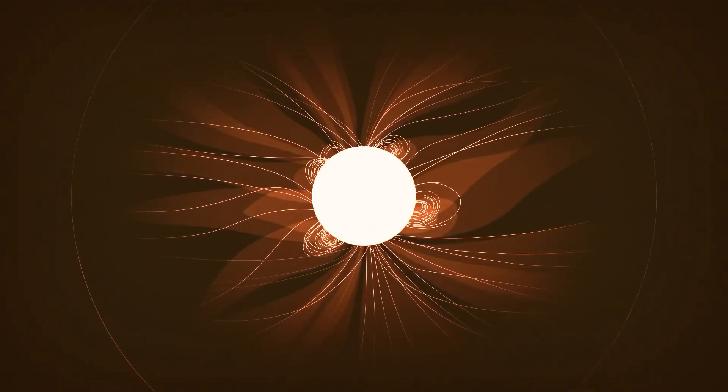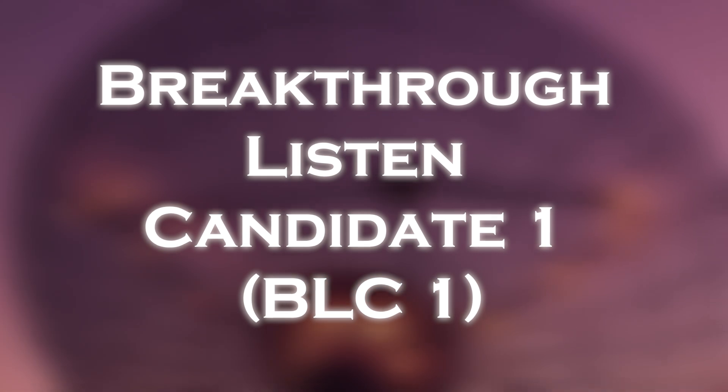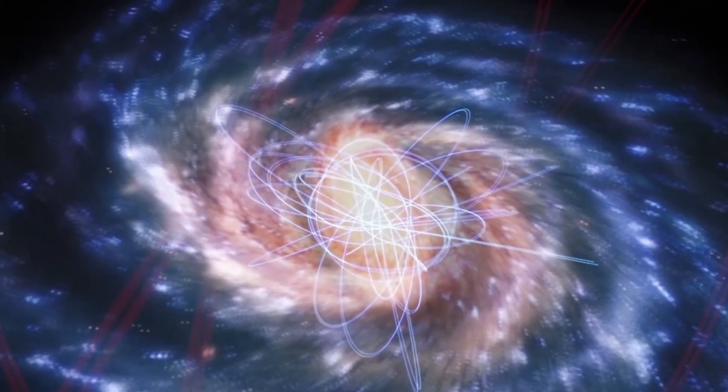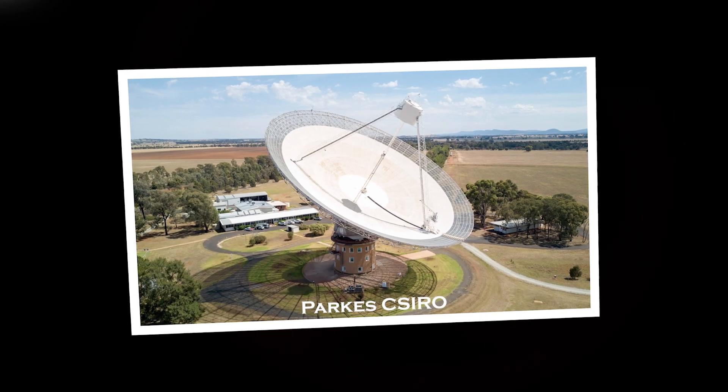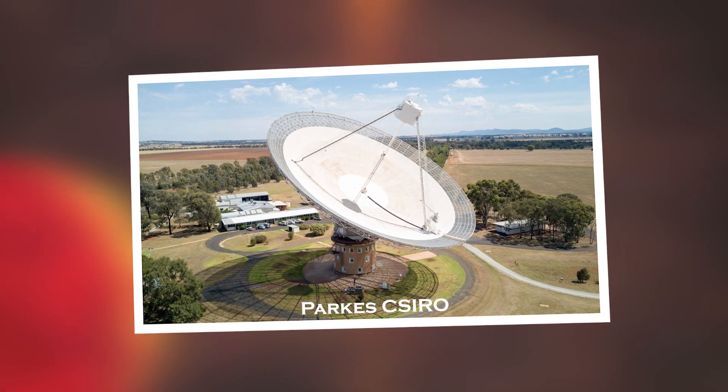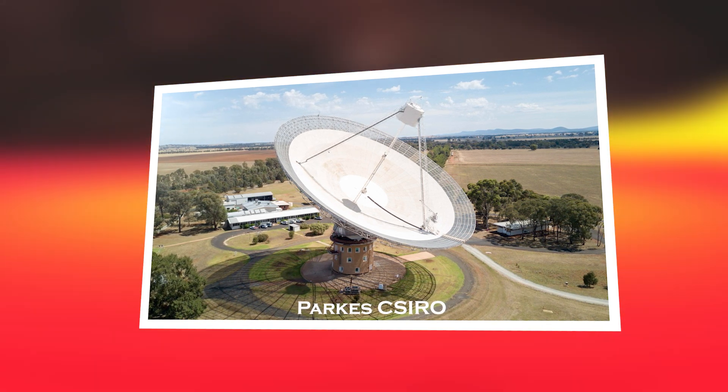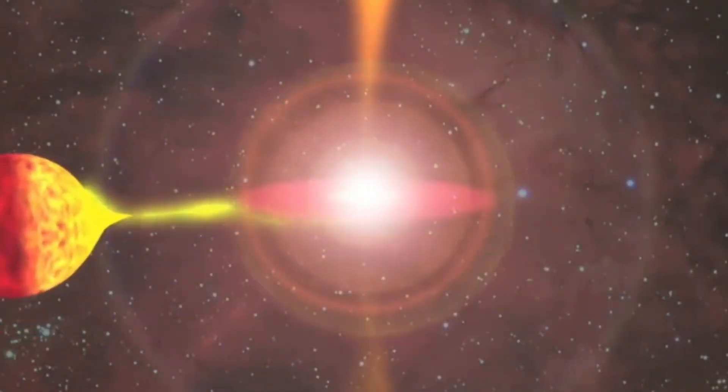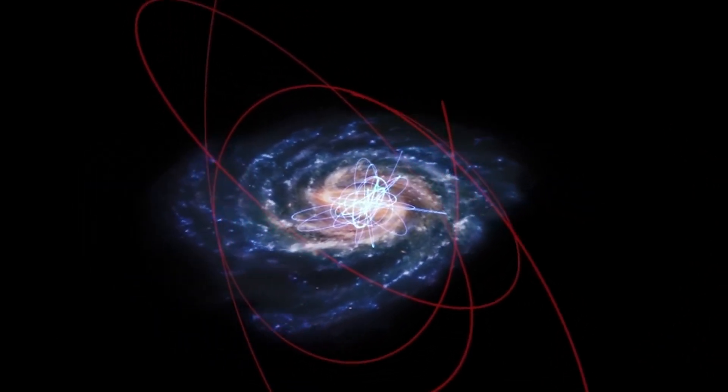But where did the signal between these two stars come from? The groundbreaking Breakthrough Listen project, dedicated to searching for extraterrestrial communication in the universe, has named this signal Breakthrough Listen Candidate 1, BLC-1. The project, which has approximately $100 million in funding, has used thousands of hours of observation with state-of-the-art telescopes around the world. The signal was detected by the Parkes radio telescope in New South Wales, Australia. This telescope was observing the region of Proxima Centauri, the closest star to our Sun. The signal almost went unnoticed among the vast volumes of data collected over thousands of hours, but the scientists managed to identify it like a needle in a haystack.